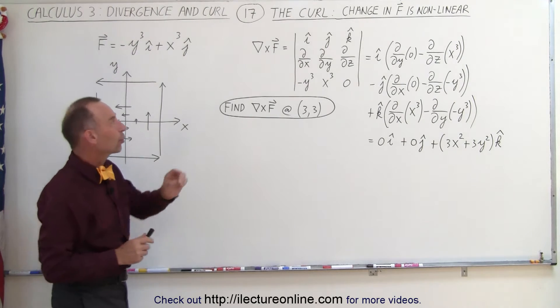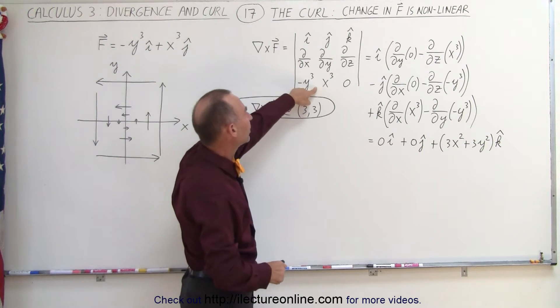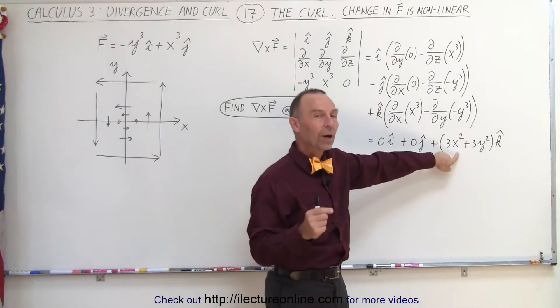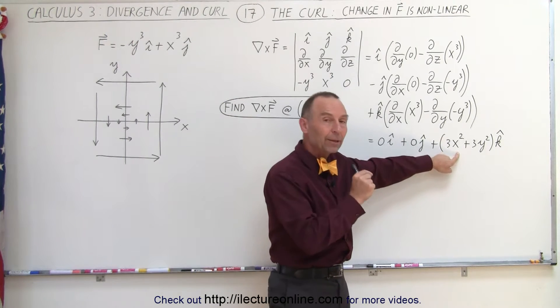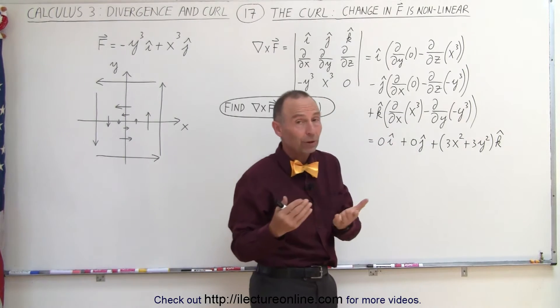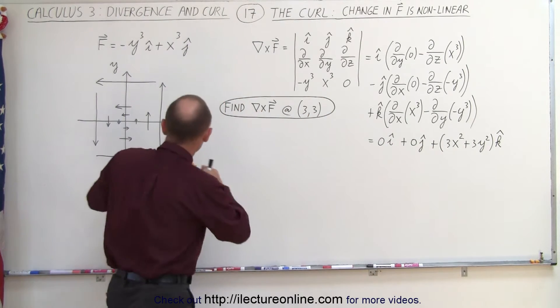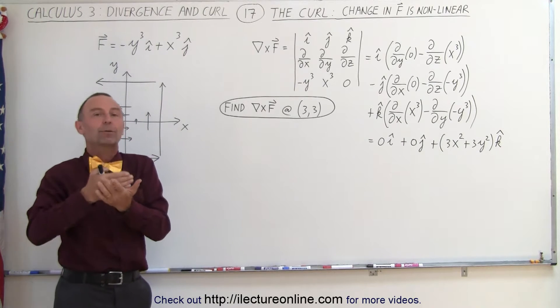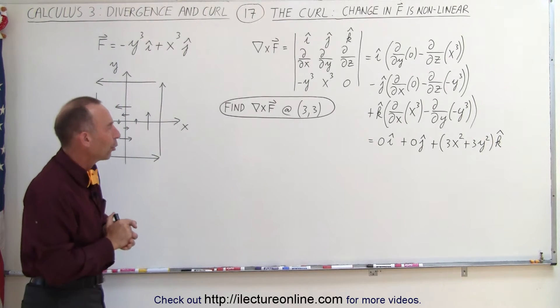When we find the curl of that particular vector field, notice that we no longer get a constant quantity. The curl does depend upon the specific position of x and y. Therefore, in order to find the curl at any point on the vector field, you have to indicate a particular point, the x and the y coordinate.